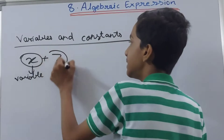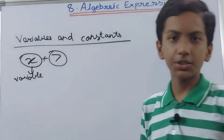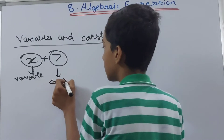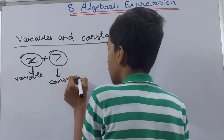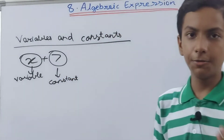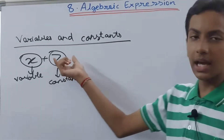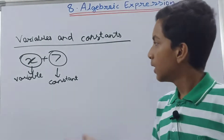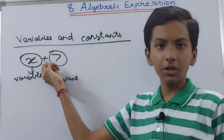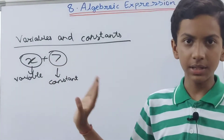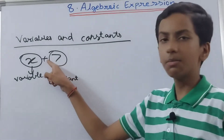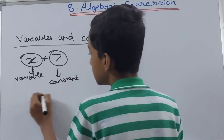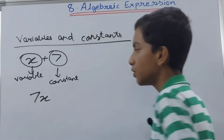And this seven here, which comes after the plus sign, is a constant. Constants always have a fixed value — it can be any number like 1, 2, 3, 4, and so on. A constant is always written after a plus or a minus sign. But sometimes you can get expressions like 7x, where there is no plus or minus sign.